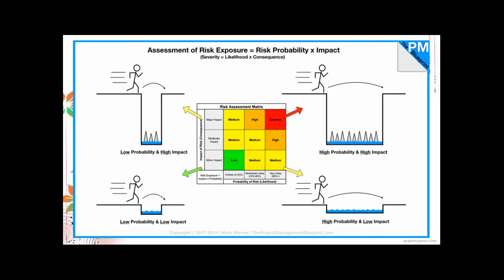When doing risk assessment, we consider how likely the event is to occur and what the impact is if it does. For example, COVID: it has high probability because it spreads easily, and the impact — for non-vulnerable people — is mostly survivable. But for the vulnerable, it has a high impact. So COVID can be rated medium to high risk, depending on who is being assessed.